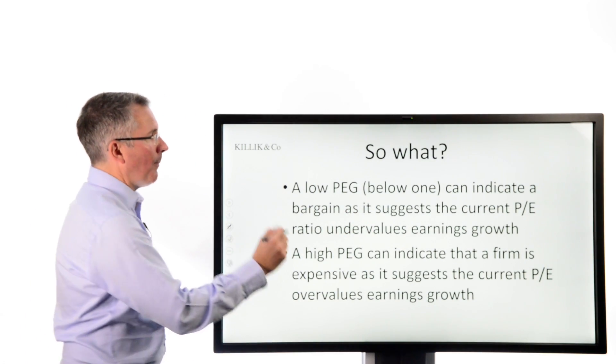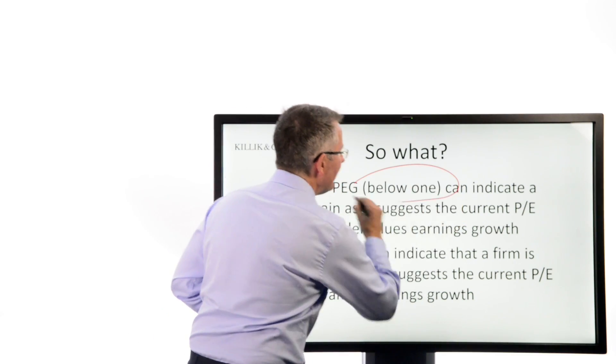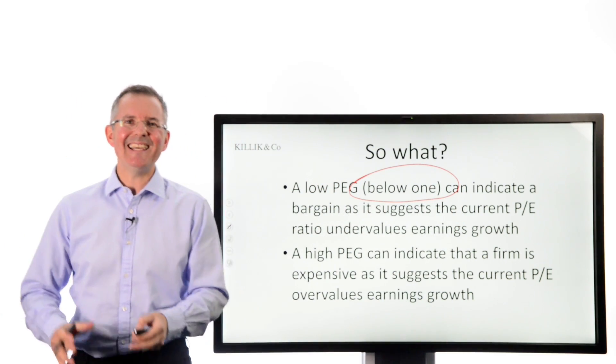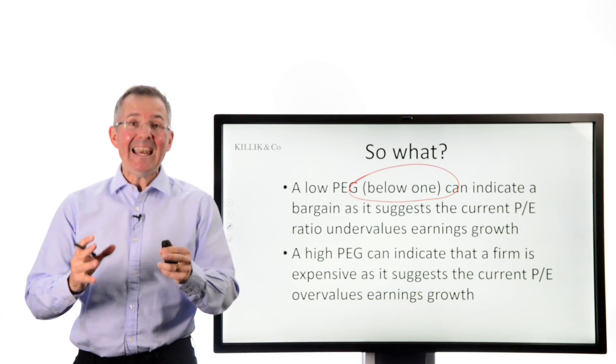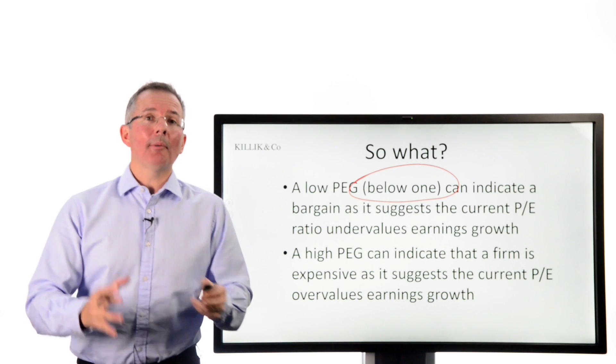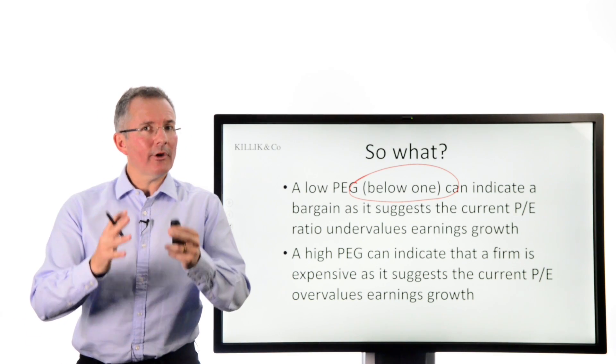A low PEG, therefore. Now, below 1 is an easy way to make a headline. If a PEG's below 1, you buy. If it's above 1, you sell. But actually, in a rising market, it can be quite hard to find any companies that are worth even mentioning with a PEG below 1. So I'm going to say a PEG below 1, fine, that's the Jim Cramer guideline.